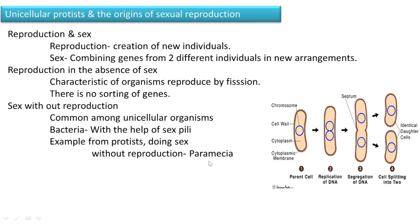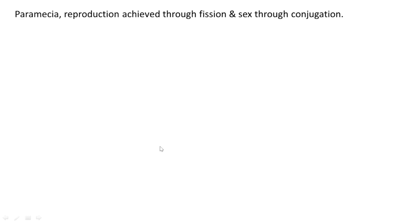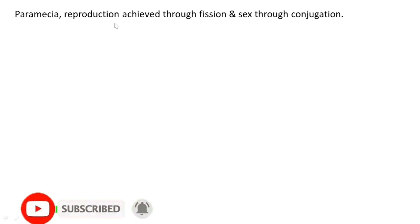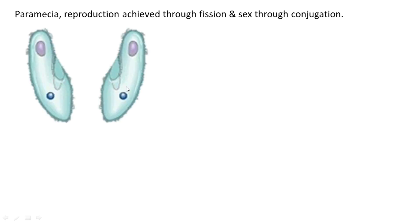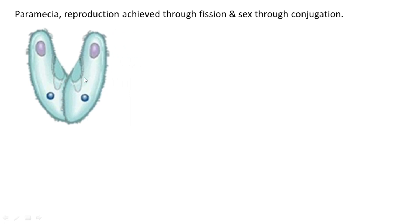We are going to see what is happening in paramecia — how their sex is occurring without reproduction. In paramecia, reproduction is achieved through fission, and sex is occurring through conjugation. Two paramecia come closer together.